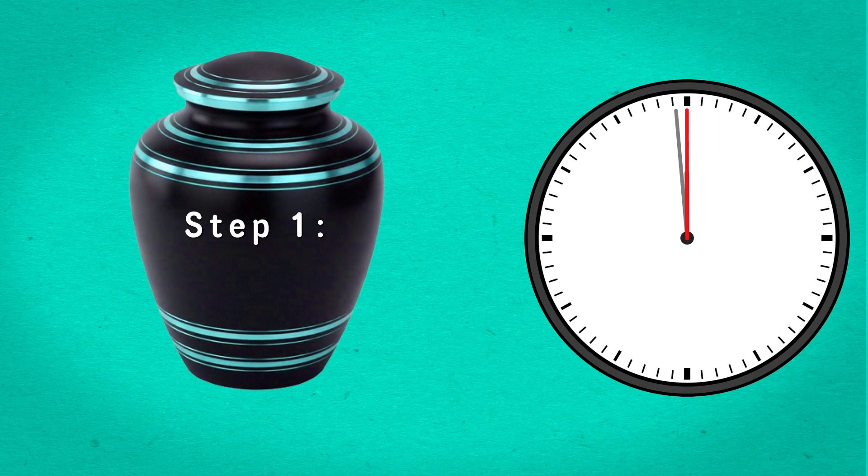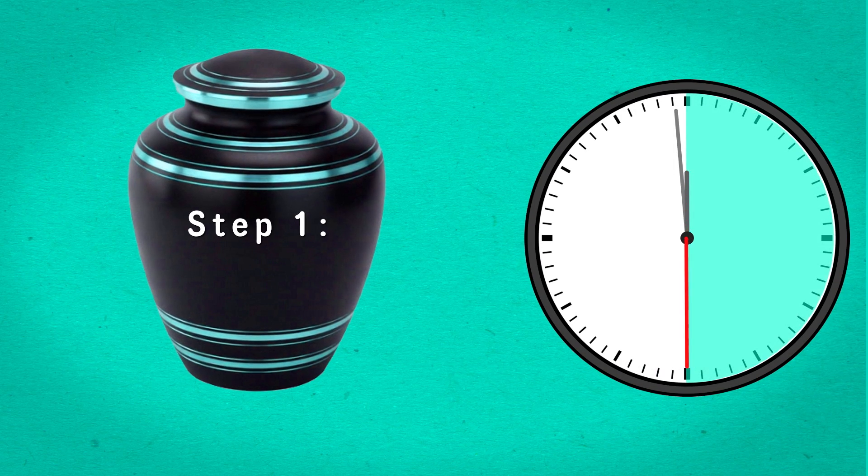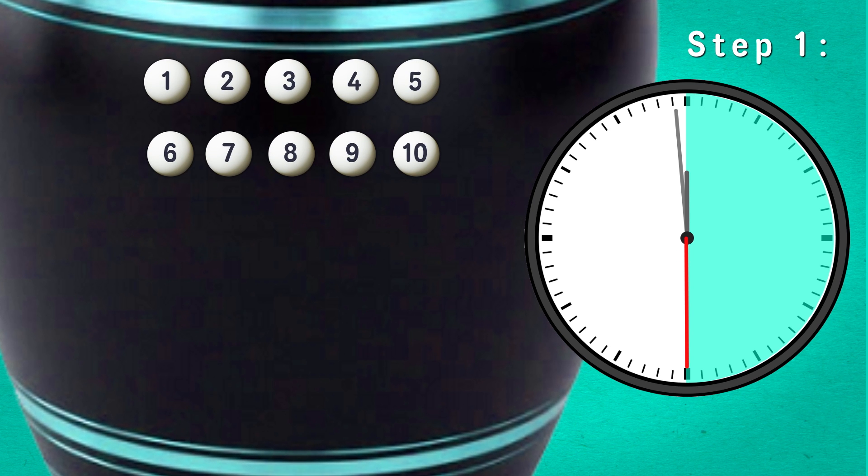Step one, half a minute before noon, place balls numbered 1 through 10 in the urn and remove the lowest numbered ball, ball number one.